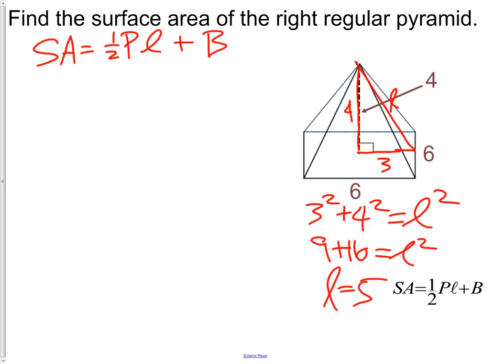Now, we should have everything we need for the formula. The surface area is equal to 1 half of the perimeter of the base. We need to add up all four sides. We have a 6 by 6 by 6 by 6. So the perimeter of the base is 24.